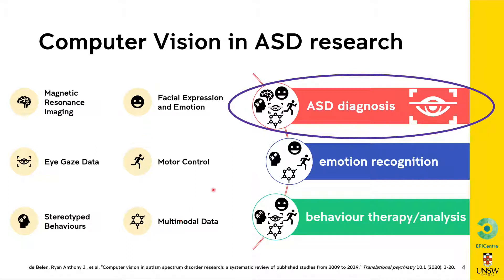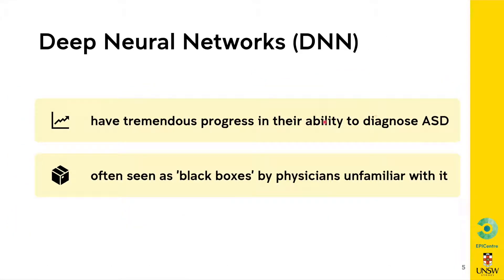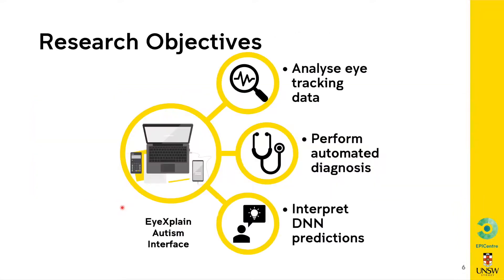In this talk, I'm going to focus on how eye tracking data can be used for ASD diagnosis. Recently, deep neural networks have seen tremendous progress in their ability to diagnose autism. However, they're often seen as black boxes by physicians unfamiliar with them. That's why in this research, we're going to present iExplain Autism, where clinicians can analyze eye tracking data, perform automated diagnosis, and interpret DNN predictions.